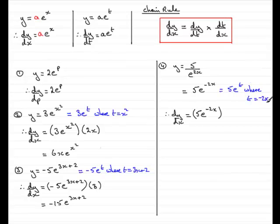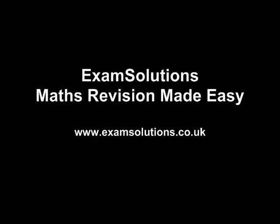Tidy this up, and what you've got is minus 10e to the minus 2x. So I hope by now you're starting to get the idea of how you can differentiate exponential functions when they have got more than just an x as the power here. Okay, just use the chain rule. Okay, well that brings us now to the end of this tutorial. Thank you.